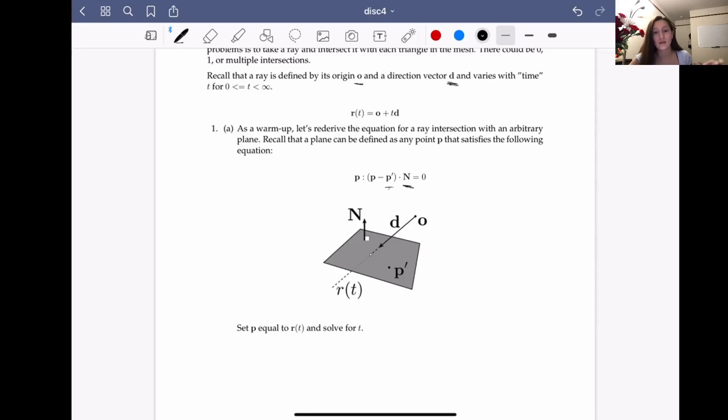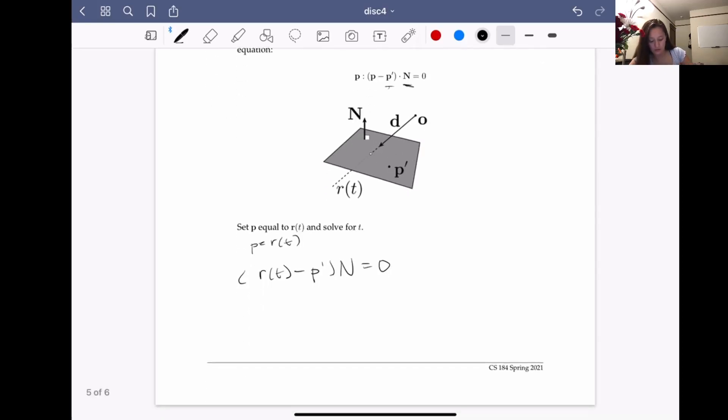And given all these parameters, we want to determine at what time T our ray intersects with our plane. So how do we do that? Well, let's take P equal to our ray at T. This means that if we plug it into our plane equation, we will get our ray intersection equation. So let's just solve for T.